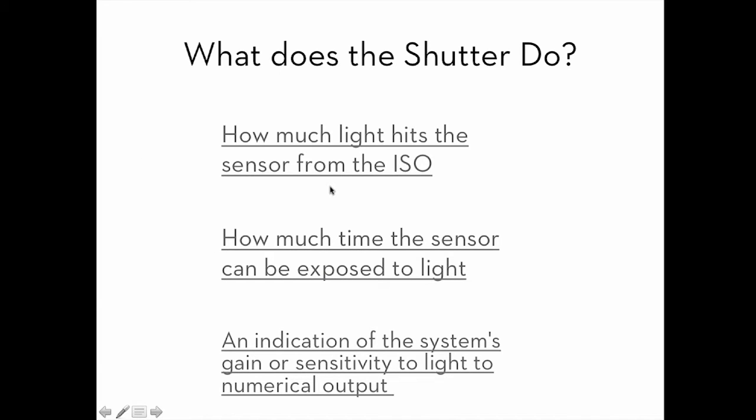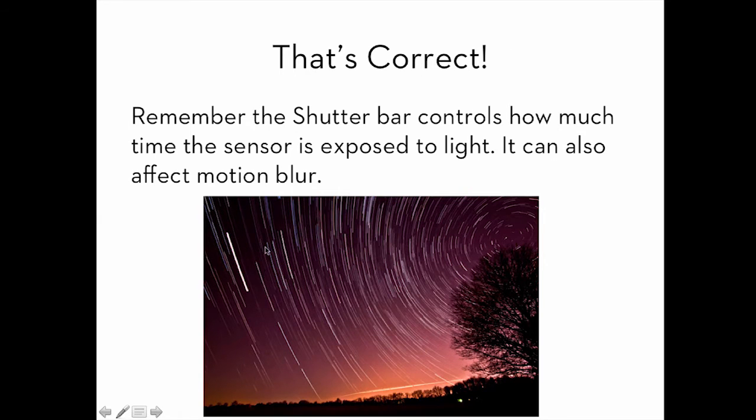What does the shutter do? Does it matter how much light hits the sensor or film? How much time the sensor or film can be exposed to light? Or how sensitive or indication of the system's gain or sensitivity to light in the numerical output? The shutter is how much time a sensor is exposed to light. The middle one. That's correct. Remember, the shutter bar also controls how much time the sensor is exposed to light. It can also affect motion blur. In my lecture, remember that if you're shooting handheld and you don't want a motion blur, you're going to be shooting at 1/60th of a second. That's a fraction of a second. 1/60th of a second to get the best image possible without getting any motion blur.